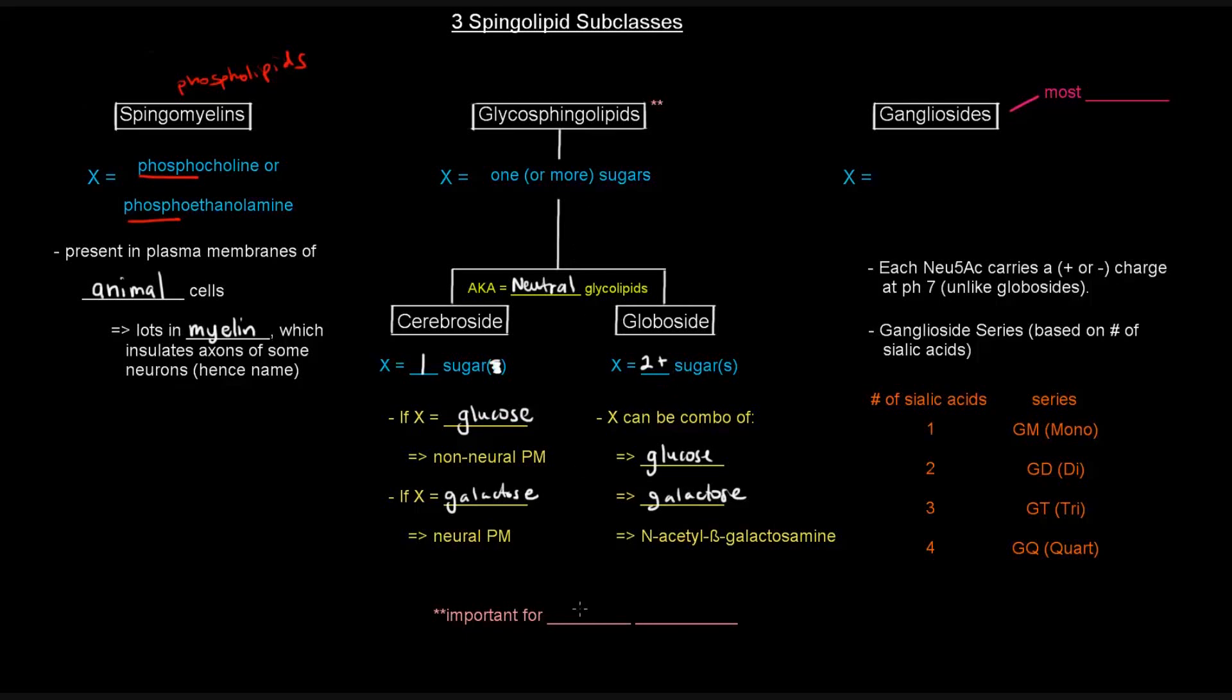And these glycosphingolipids are actually important for blood typing. So, like A, B, and O. These are important for blood typing. Fun fact.